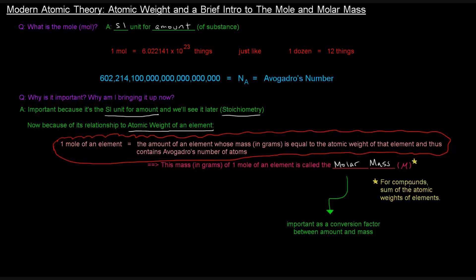And you can have the molar mass of compounds, in which case it would just be the sum of the atomic weights of the elements. But here we're talking about just a particular element. Molar mass is important as a conversion factor between amount and mass. So, let's think about this with an example.